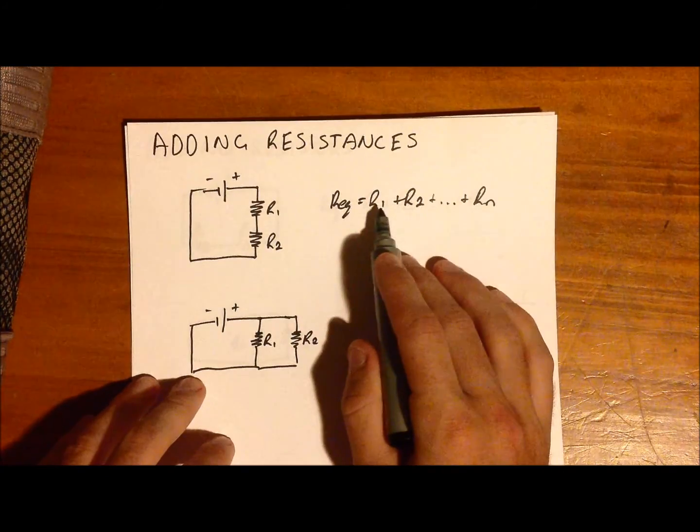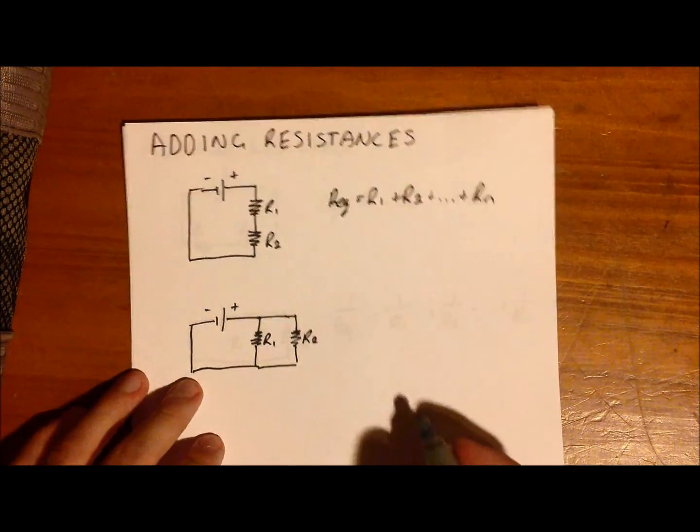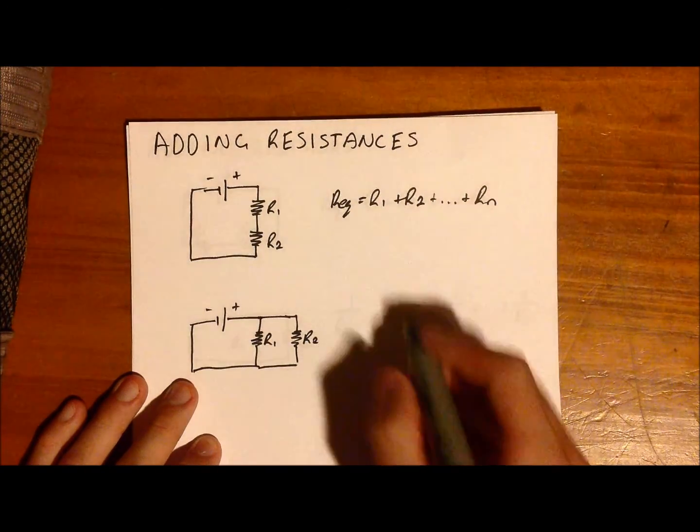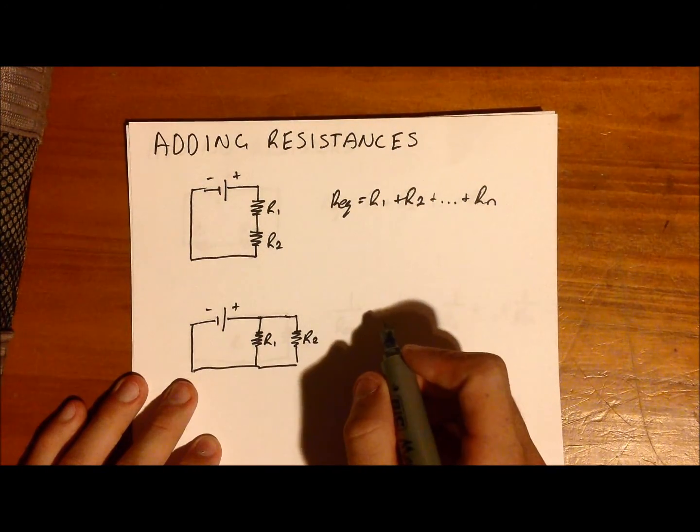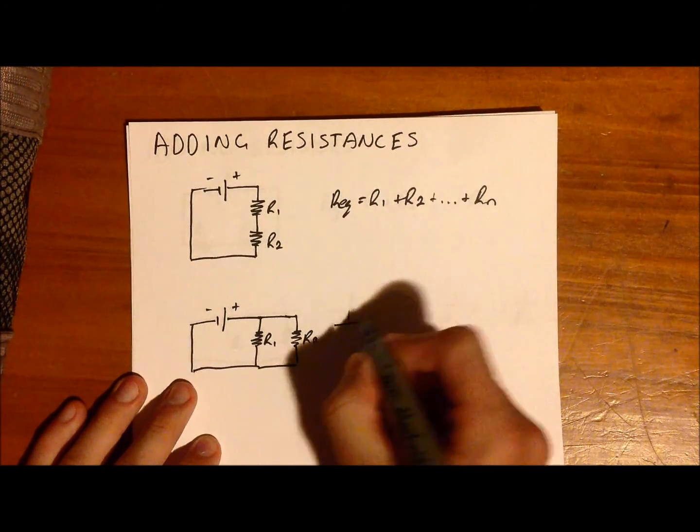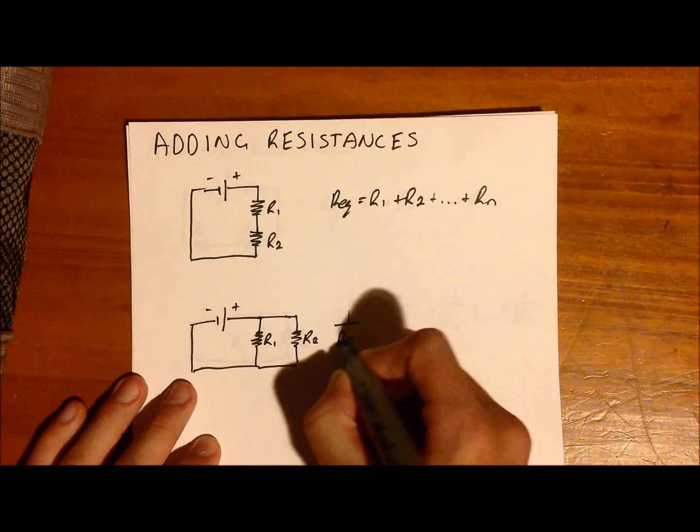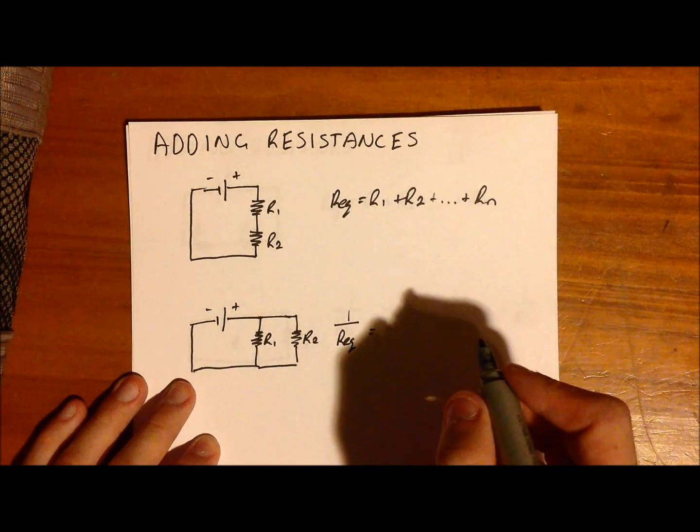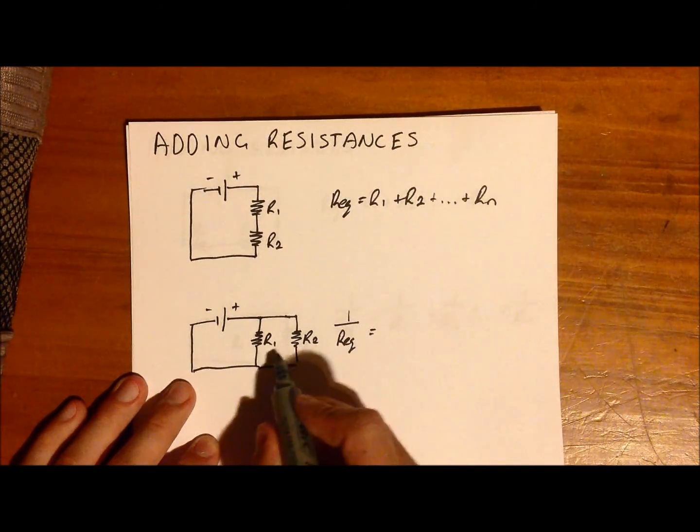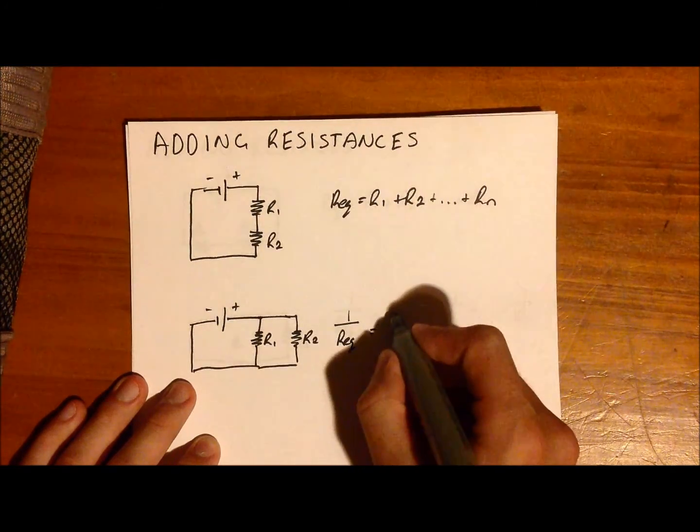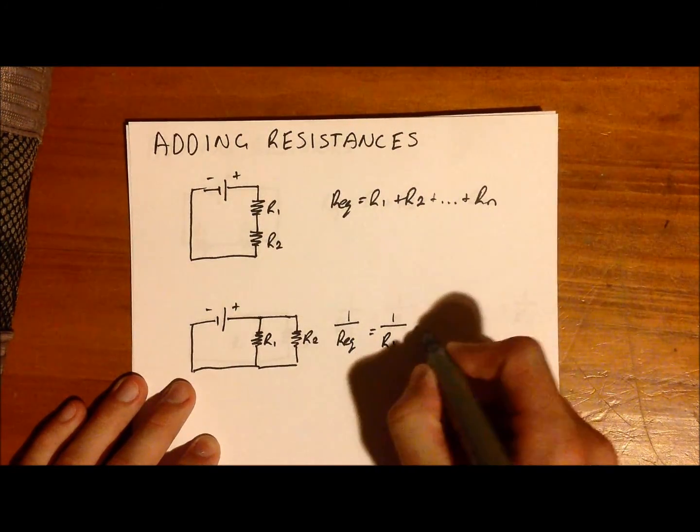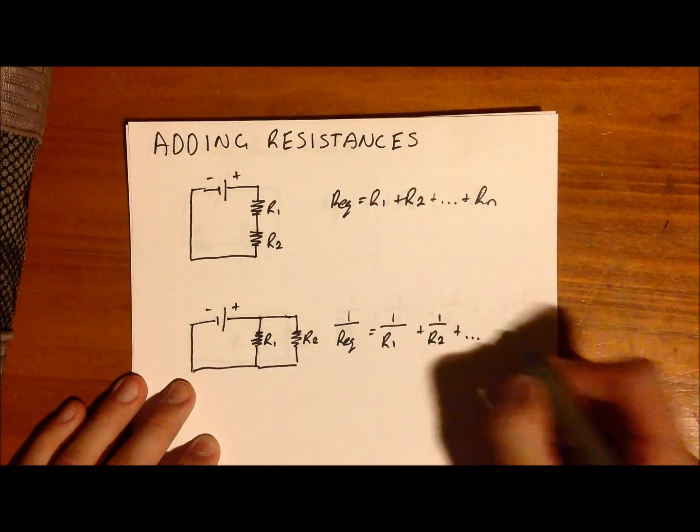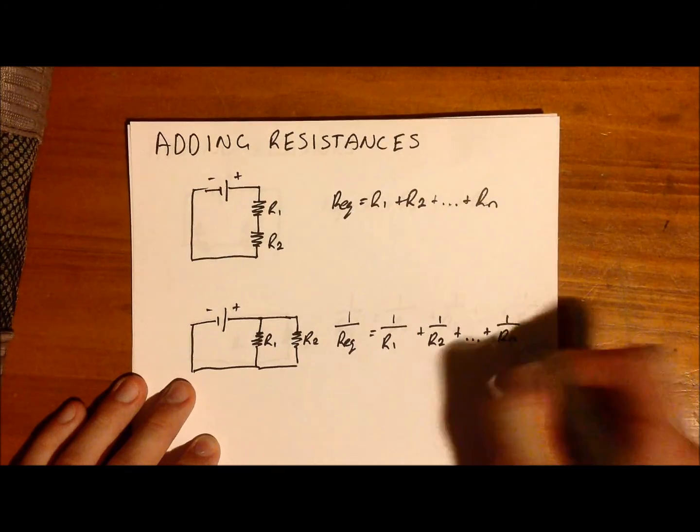So the second example is for parallel circuits. The way we do this, the reciprocal of the equivalent resistance is equal to the sum of the reciprocals of all of the other resistors in the circuit. So it's given by 1/R1, 1/R2, and again it can accommodate for an infinite amount of resistors as well.